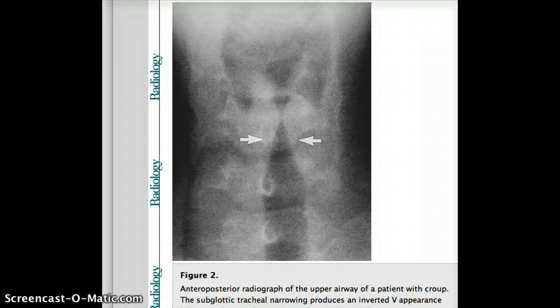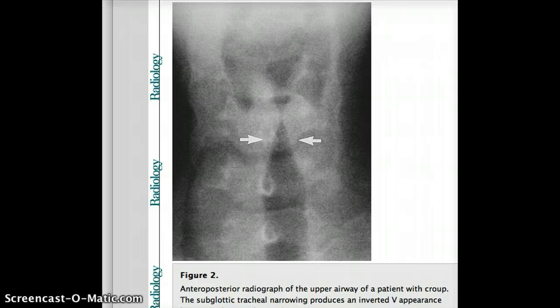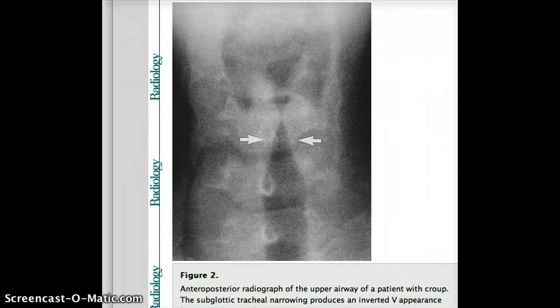One more thing about the lower esophagus — when are you going to see decreased peristalsis? Decreased peristalsis is usually seen in scleroderma or CREST. For scleroderma, the antibody is anti-SCL-70, and for CREST it's anti-centromere antibody. I always remember CREST: C for CREST and C for centromere.